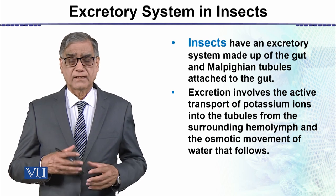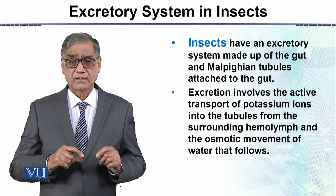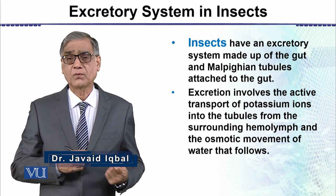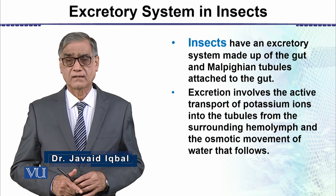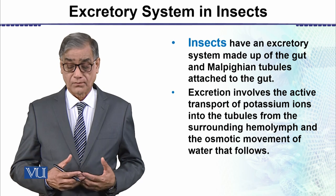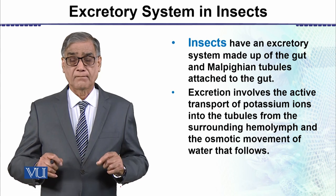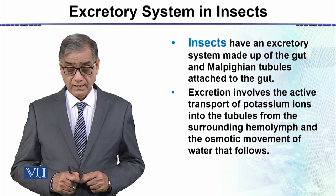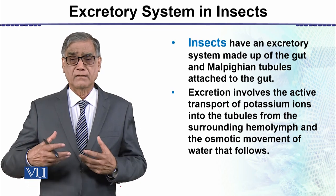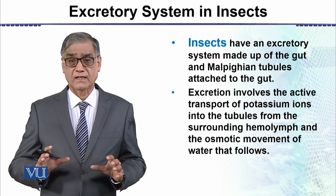The excretory system is associated with the digestive system. The insects have an excretory system made up of the gut and Malpighian tubules. This excretory system, called Malpighian tubules, is attached to the gut. That means the digestive system and excretory system are not separate — they are related to one another.